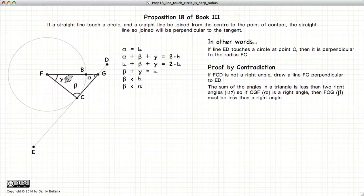...which means that alpha plus beta together must sum up to equal a right angle, or simply put, beta is less than a right angle. So if beta is less than a right angle and alpha is a right angle, beta is less than alpha.